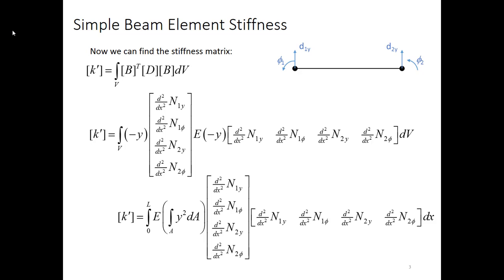However, y does depend on what's going on inside the cross section. So it needs to be inside that integral for dA. But observe that this is what we call the moment of inertia, the cross sectional or area moment of inertia for a beam. That's how i enters into the stiffness for the beam.